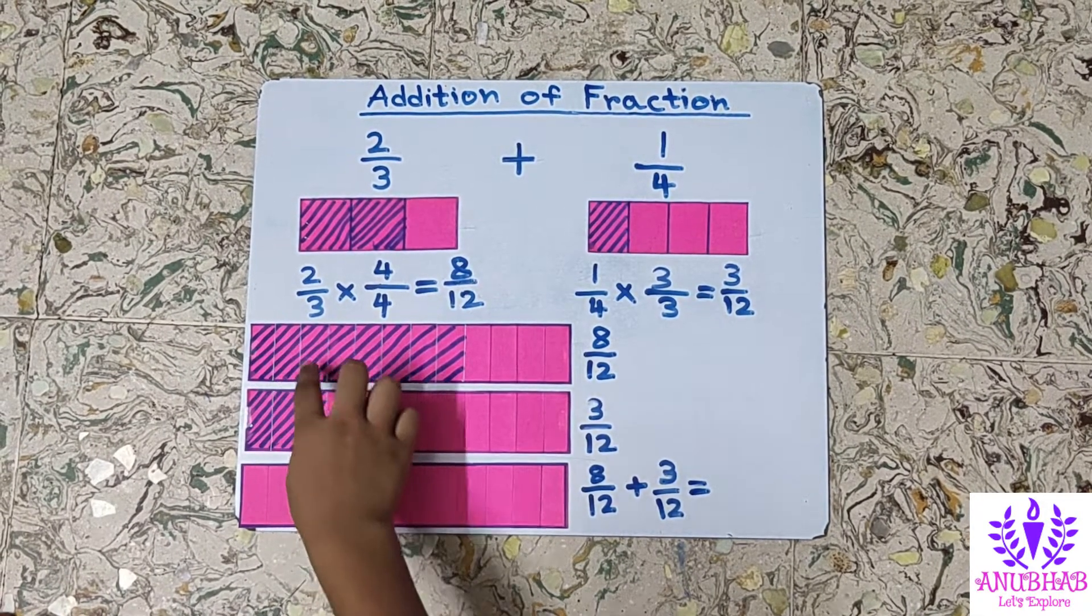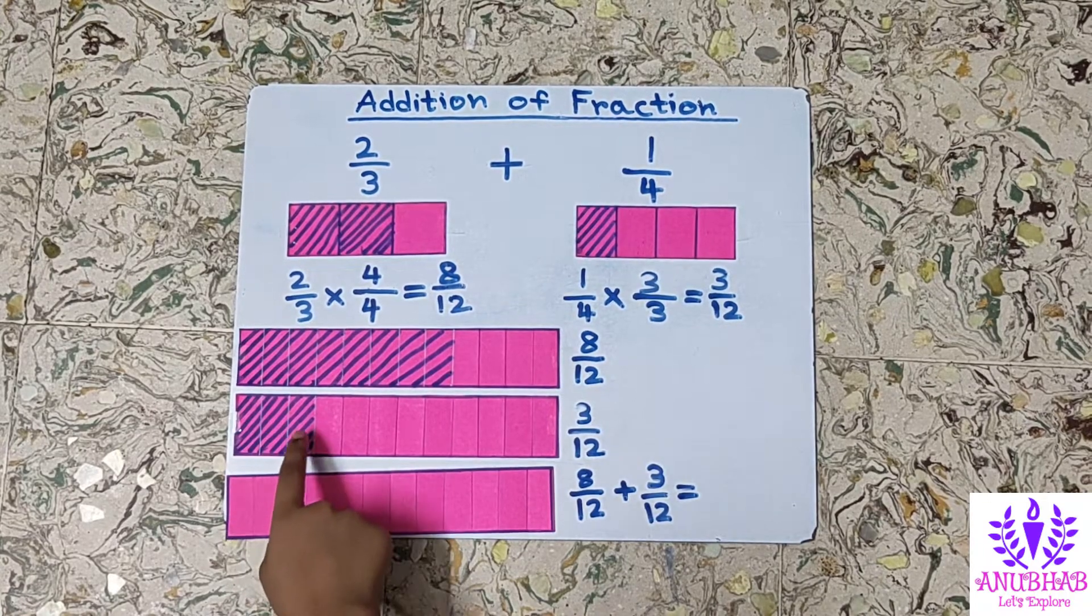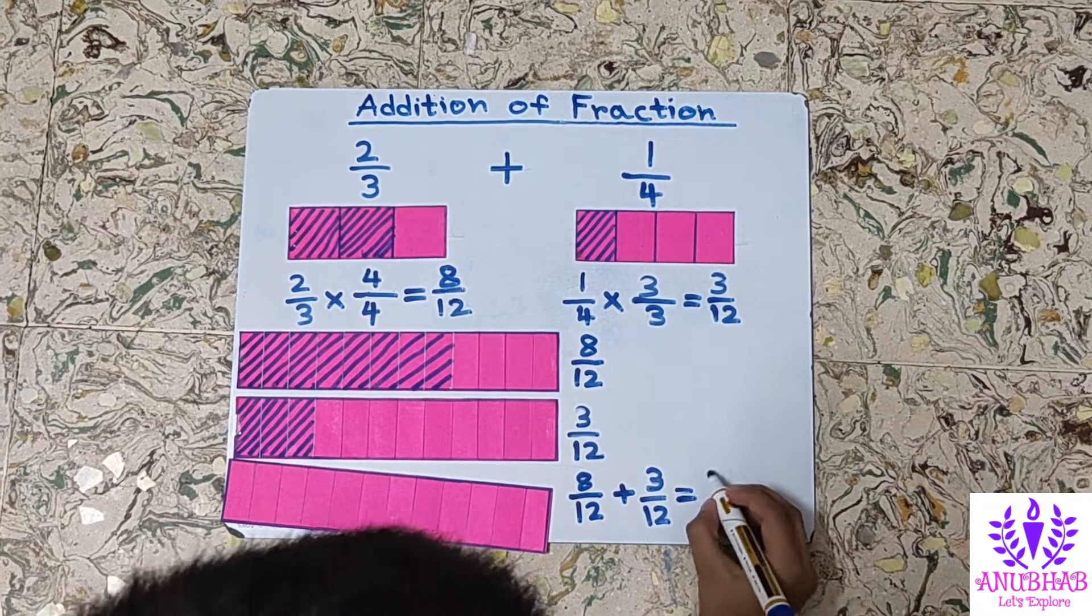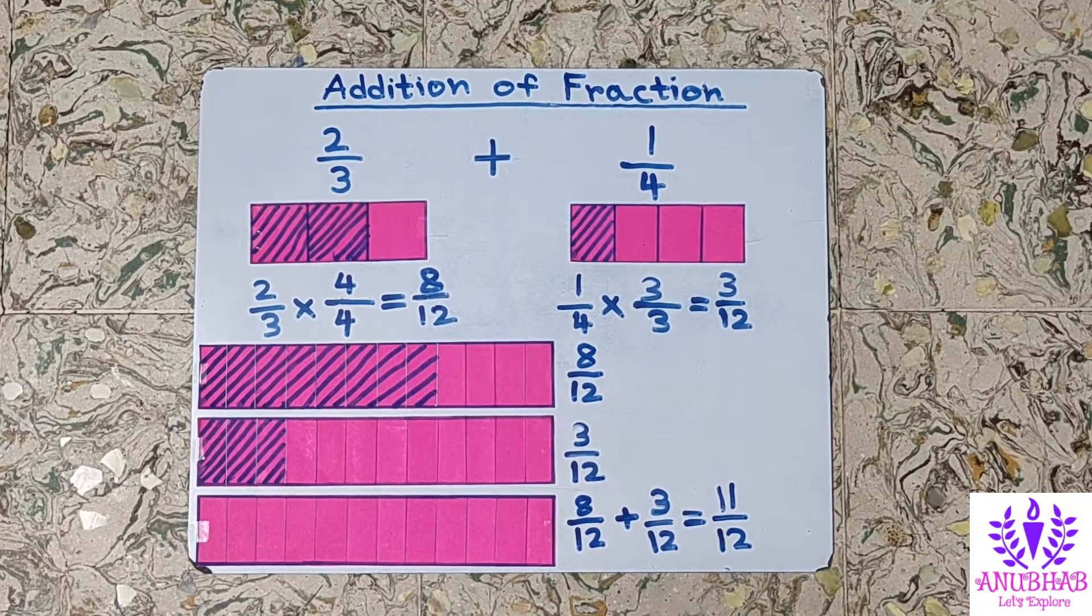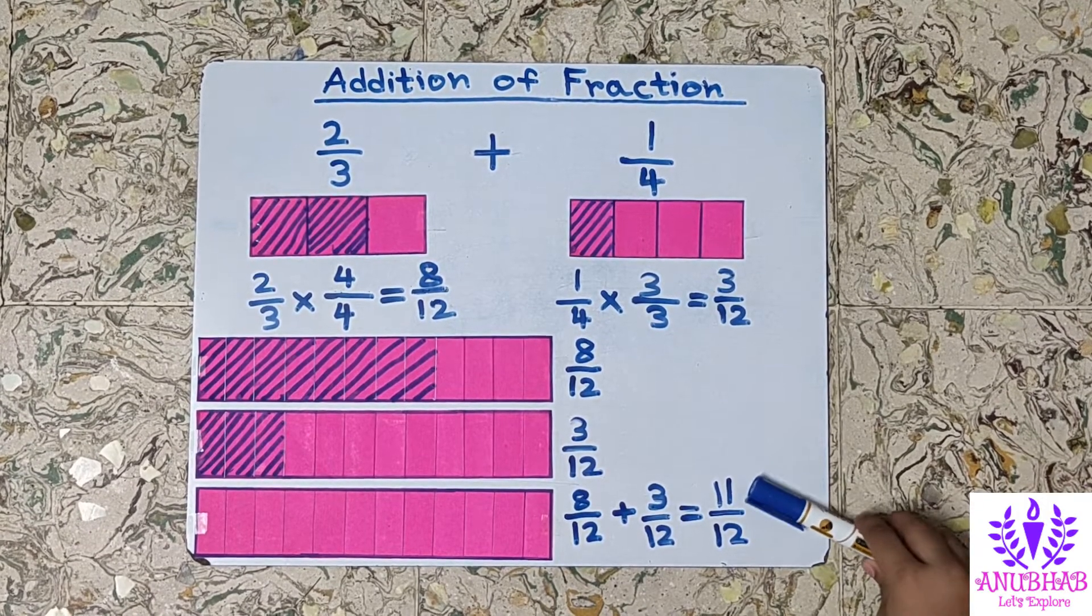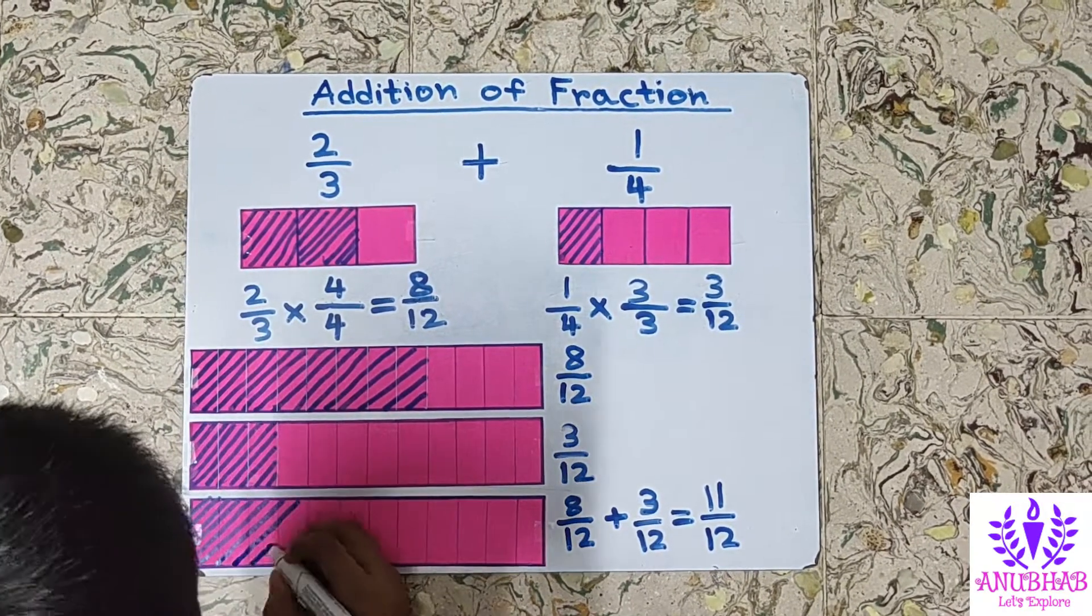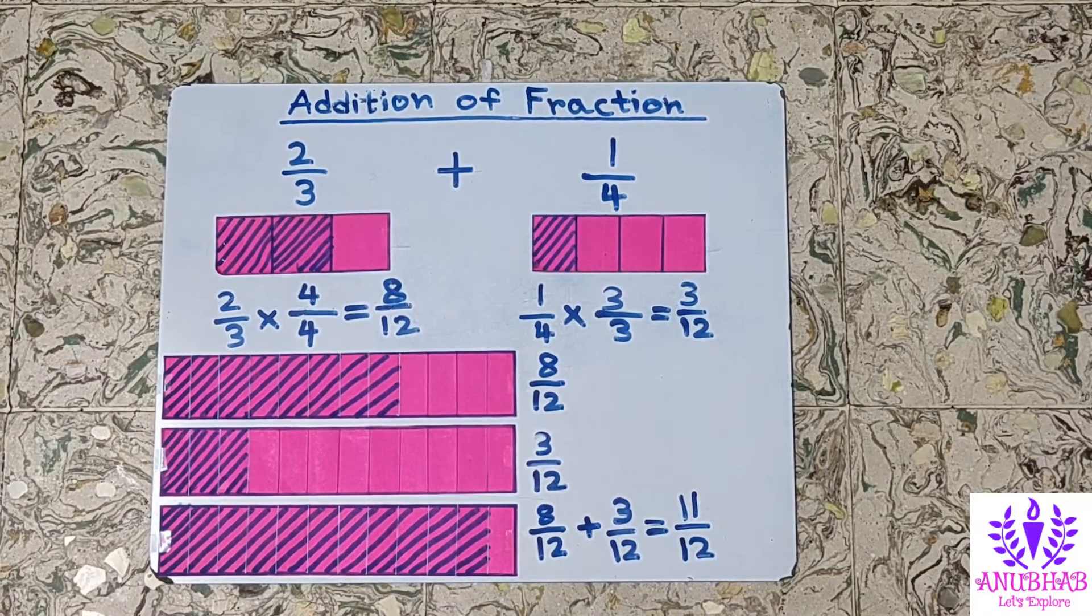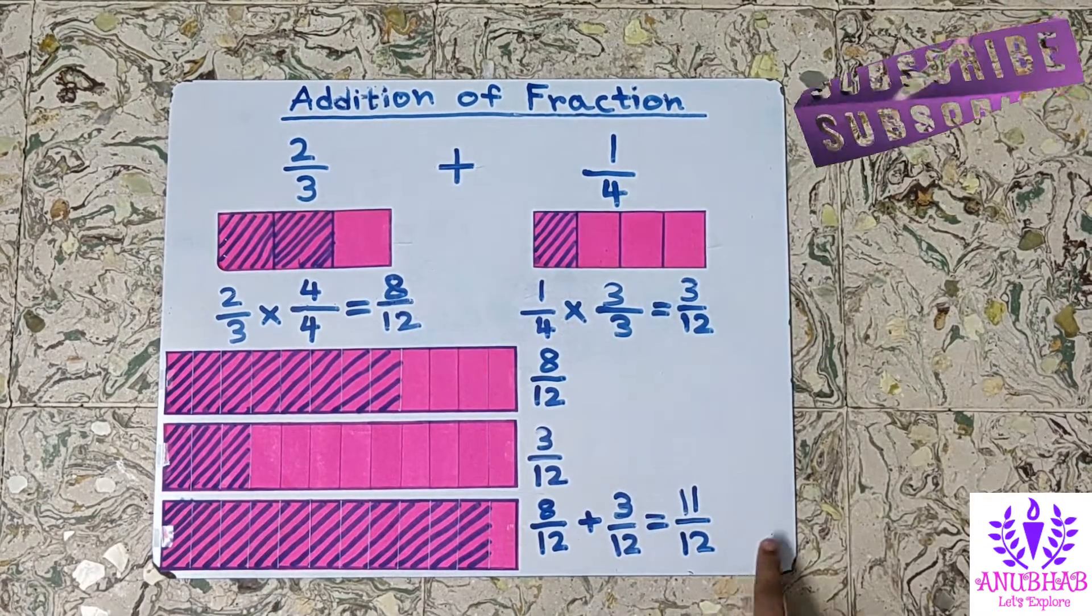8 by 12 plus 3 by 12 is equal to... Let's count: 1, 2, 3, 4, 5, 6, 7, 8, 9, 10, 11. So 8 plus 3 is equal to 11. And the denominator will remain the same. Now we will shade 11 parts out of these 12 parts because here the numerator is 11. So it is proved that addition of fractions 2 by 3 plus 1 by 4 is 11 by 12.